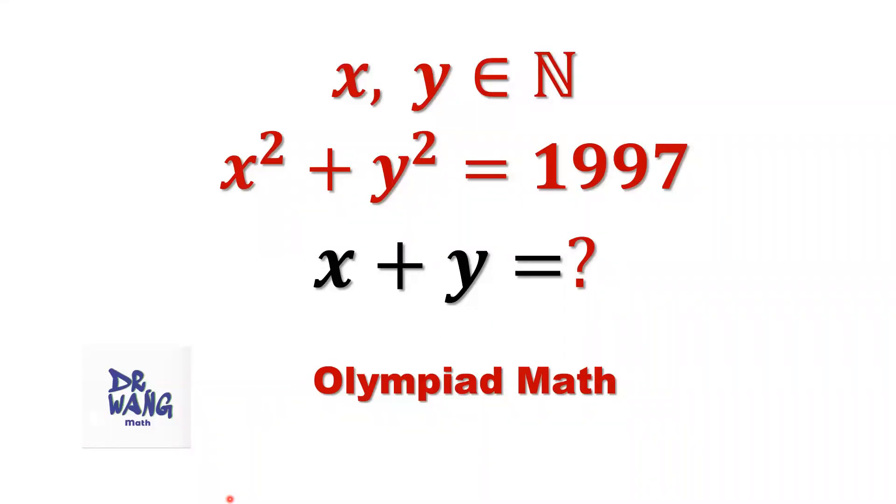Hello everyone, I'm Dr. Wen. Here is the question. If x and y are positive integers, x squared plus y squared equals 1997, what is the value of x plus y?